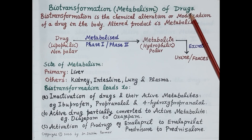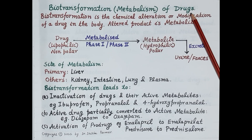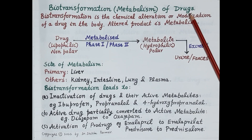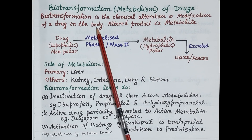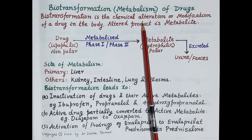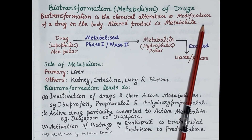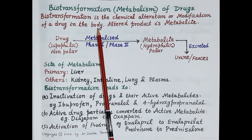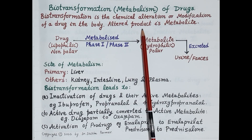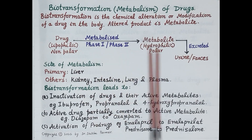Hello students. In today's video we are going to study biotransformation of drugs. Biotransformation is also termed as metabolism. This video is the seventh in the series of videos on pharmacokinetics. Biotransformation or metabolism is a process by which a drug is chemically transformed or modified in the body. It is defined as a chemical alteration or modification of a drug in the body. The altered product or altered drug moiety is called the metabolite.